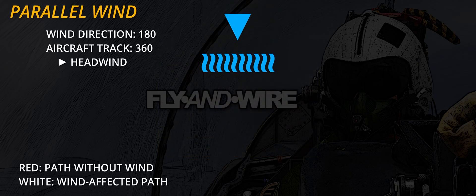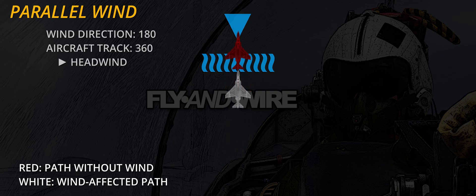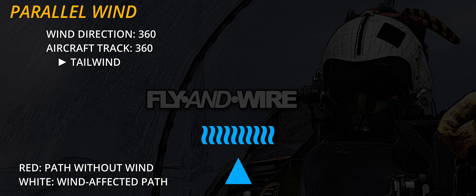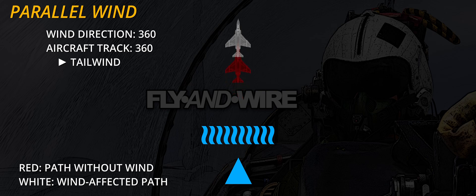The two simplest cases are wind in the same direction, or following the reciprocal. In this case, the aircraft is accelerated or slowed down by the full force of the wind. The effect on the aircraft track is minimal. To compensate, the aeroplane can reduce or increase its speed to a value similar to the wind speed.